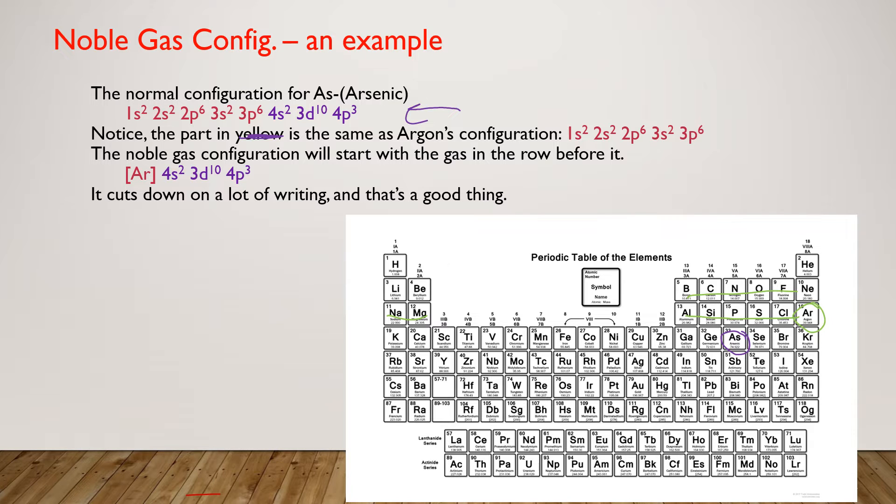So what this allows us to do is look at the noble gas that comes before the element we're going to do the electron configuration for, and it's going to cut out that part of the configuration. Here's argon's configuration. That makes up this whole part of arsenic's configuration.